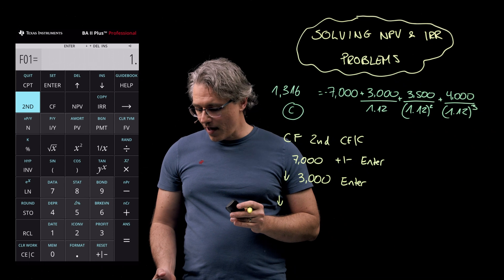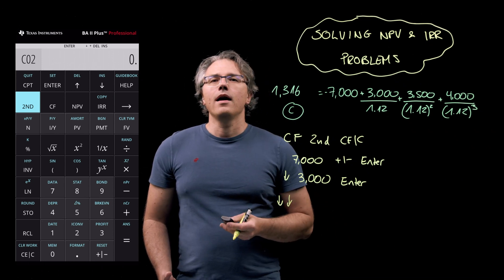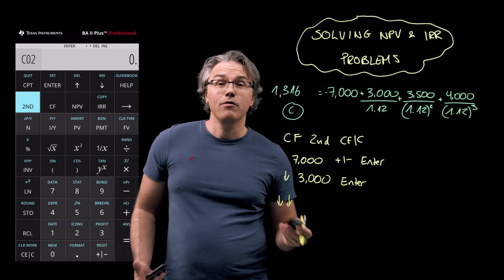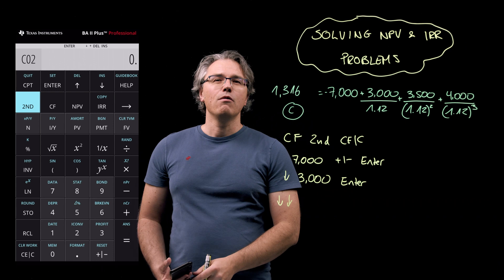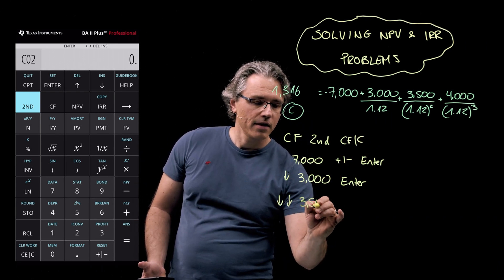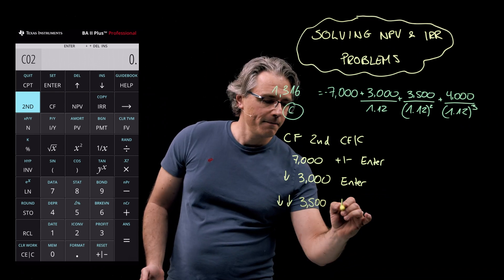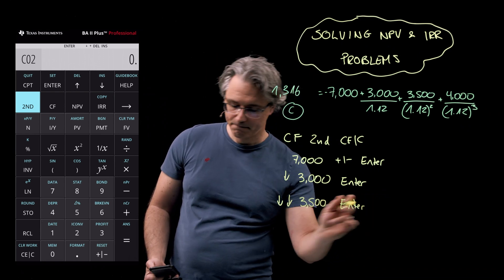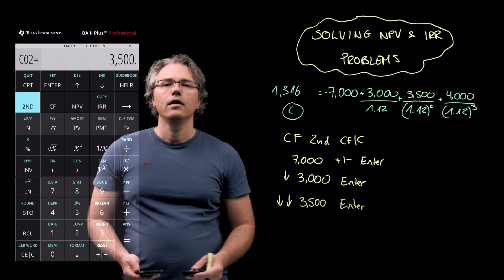So press the down arrow again for the second time over here. And we now get to the place where we input the cash flow at time two. We want to make this three and a half thousand, obviously followed by enter.